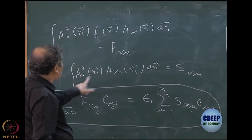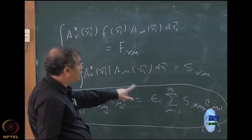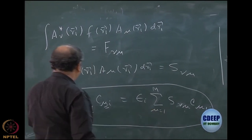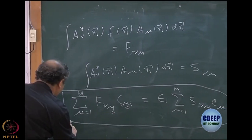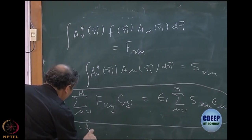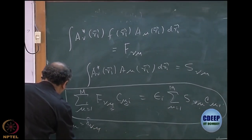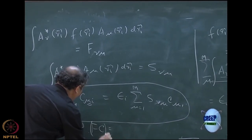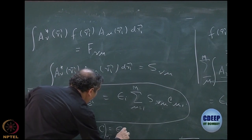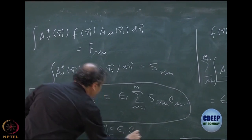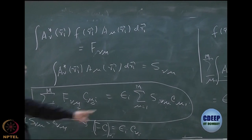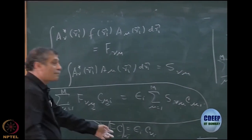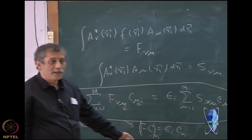But imagine if they were orthonormal basis, what would happen? This will become a delta, right. So then nu would be equal to mu. So in an orthonormal basis, let's say S nu mu equal to delta nu mu. This equation will then become F C equal to, or F C of mu I the element equal to epsilon I C mu I. Because nu would be equal to mu.